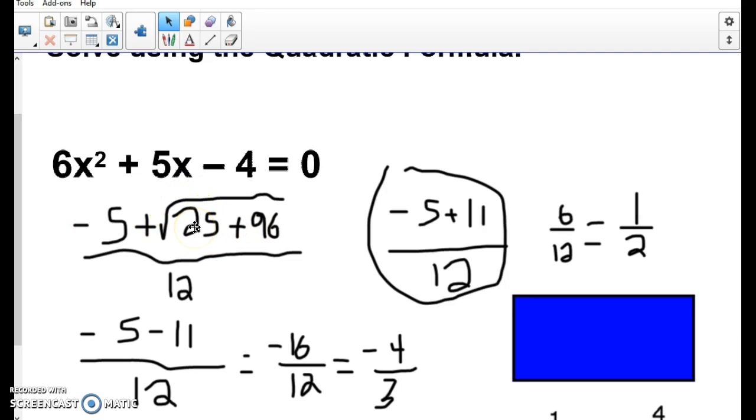And if I would have gotten something like a negative 121, well, I know that's not possible because you can't take the square root of a negative number, so then it would be something that's no solution.